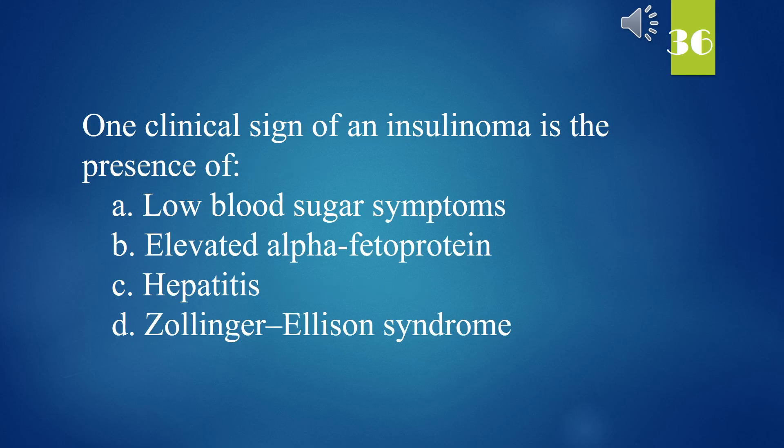One clinical sign of an insulinoma is the presence of: A. Low blood sugar symptoms. B. Elevated alpha-fetoprotein. C. Hepatitis. D. Zollinger-Ellison syndrome. The answer is A. Low blood sugar symptoms.